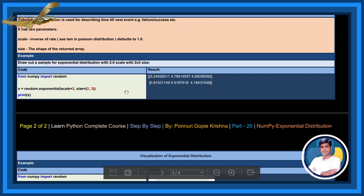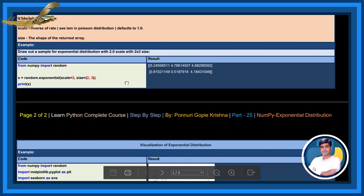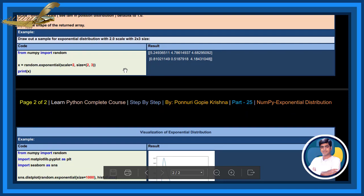See example, draw out a sample for exponential distribution with 2.0 scale with 2 into 3 size. See here, by writing this code and executing, the result returns this.